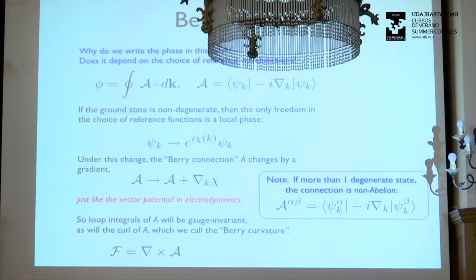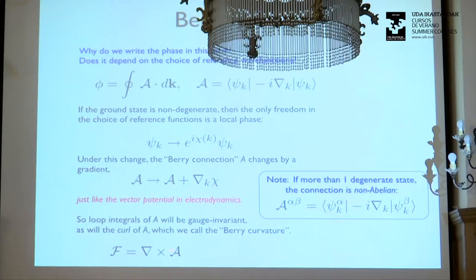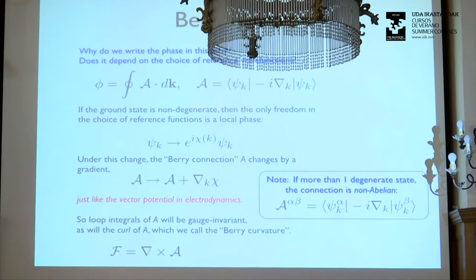If we disagree on the phase in a way that depends on momentum, we will get different values of the Berry connection — they'll differ by a gradient of the phase, just like in electrodynamics. But there are things we will agree on: we agree on the curl of A, which is the Berry curvature. We almost agree on loop integrals of A. If it's around a non-contractible loop — like through the 1D Brillouin zone — it's almost gauge-invariant, but has an ambiguity by an integer, which is why polarization has an ambiguity of an integer times charge.